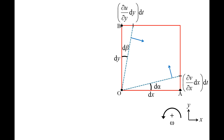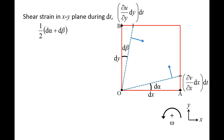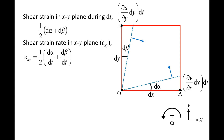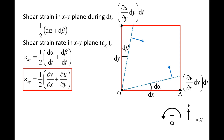The velocity gradients in a flow can be related to the rate of shear strain of fluid elements. We define the two-dimensional shear strain as the average change of the angle between two lines which are initially perpendicular, such as lines OA and OB. This means the shear strain during time dt is one-half times the quantity d alpha plus d beta. The time rate of change of the shear strain is called the shear strain rate, denoted by epsilon with subscripts related to the plane of motion. Since d alpha dt equals partial v partial x and d beta dt equals partial u partial y, the shear strain rate epsilon xy can be written as one-half times the quantity partial v partial x plus partial u partial y.